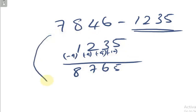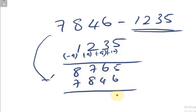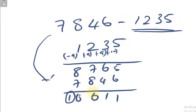Now add 7846 to 8765. You get 16611. You discard the leading digit. So 7846 minus 1235 gives you 6611.